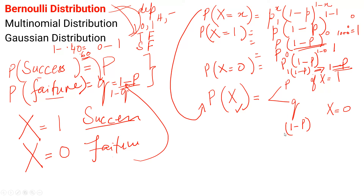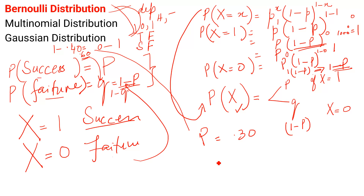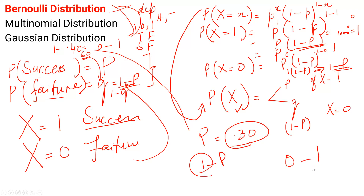This is the Bernoulli distribution — I hope the concept is clear. Again: if p is given, say 0.30, to find q just subtract 1 minus whatever is given, because probability lies between 0 and 1. I hope the concept is clear. Please practice it, subscribe to my channel, and thanks for watching.